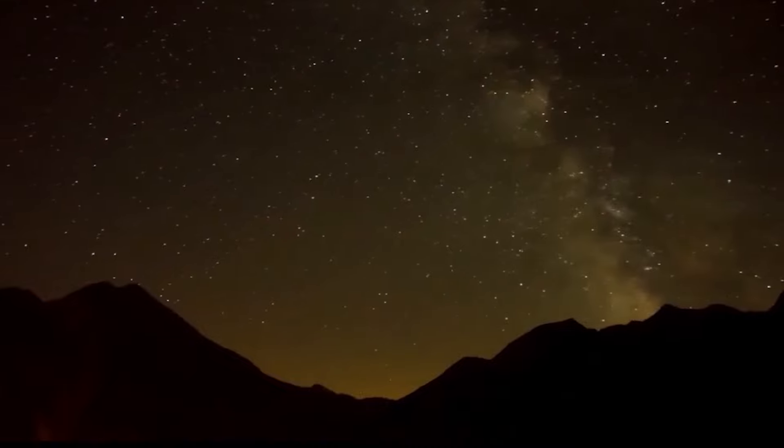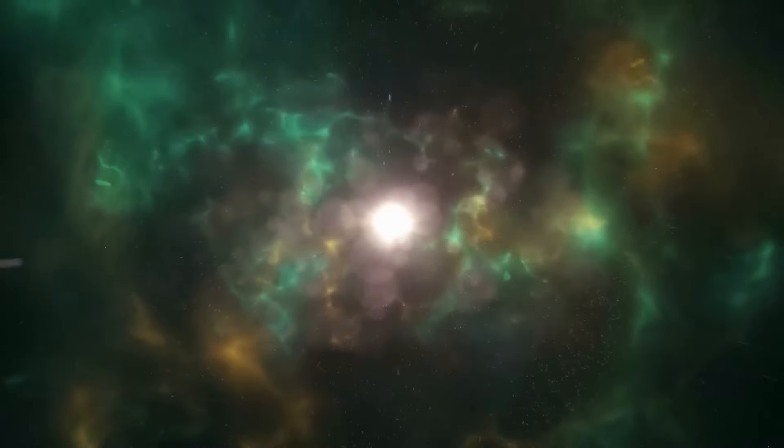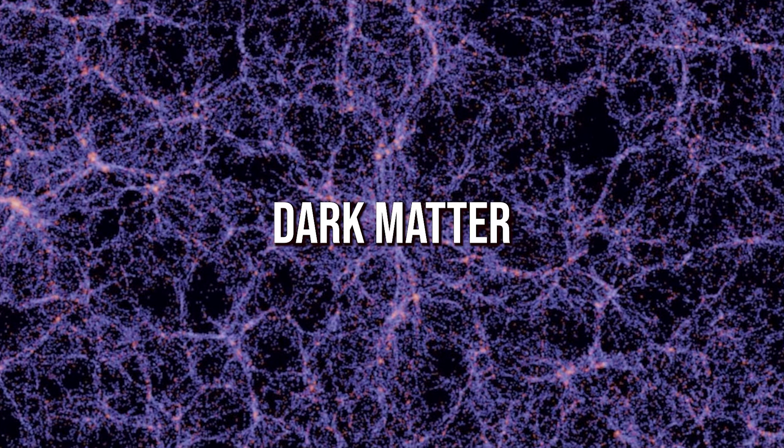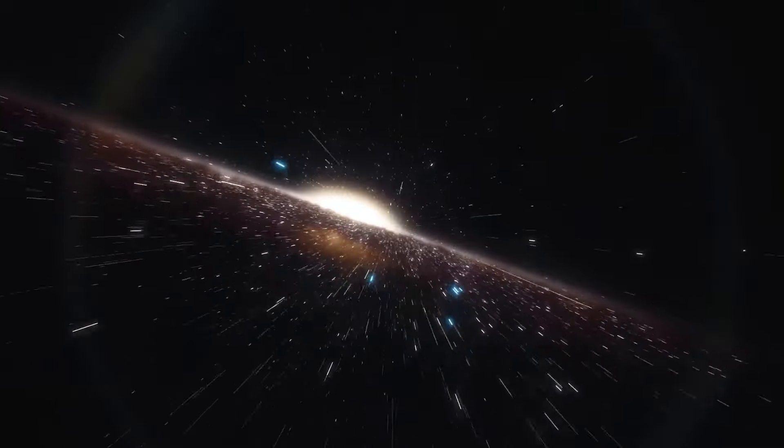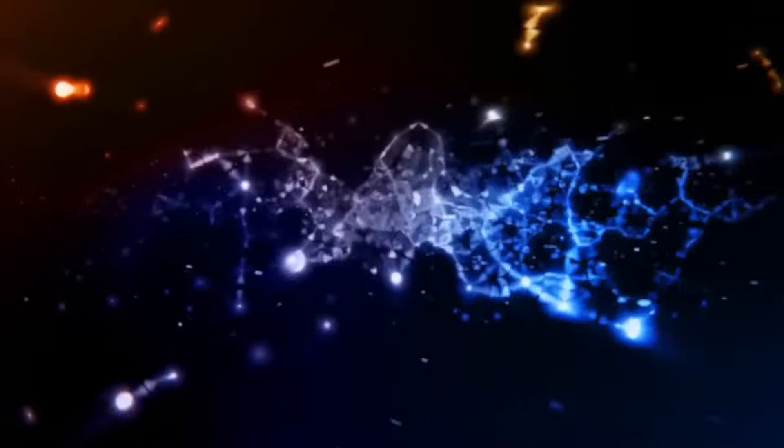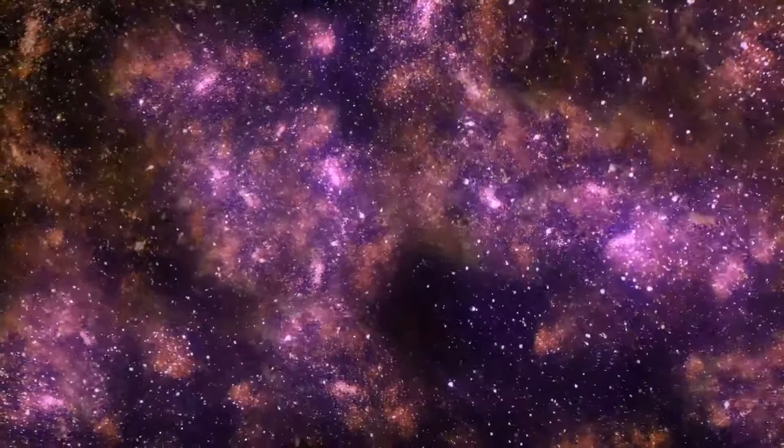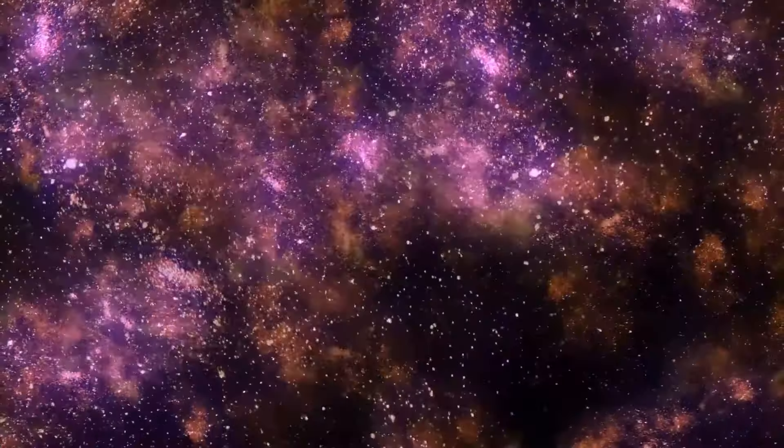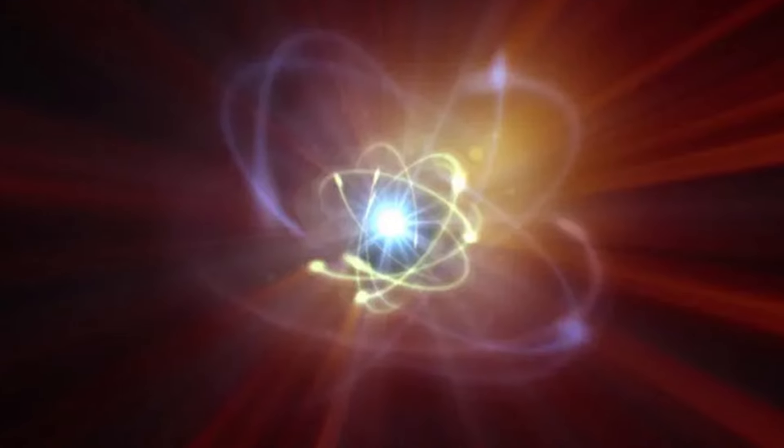Then something big happened. Most of the stuff that blasted apart after the Big Bang is made of something invisible called dark matter. It's super important in shaping how the universe works. Dark matter was flung around everywhere, and in some spots, it clumped together. Regular stuff, like atoms, gathered around these dark matter clumps.